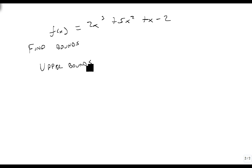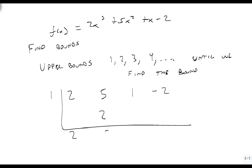We're going to take the function and divide it by 1, 2, 3, 4, and so on. So we take 2, 5, 1, minus 2, and we divide by 1. We'll notice that every number here is positive, so 1 is an upper bound. It's not even worth looking at any other number because the first number we tried was an upper bound.